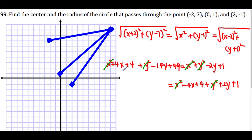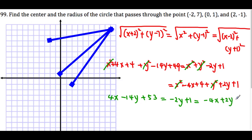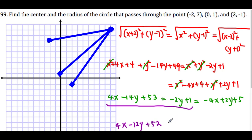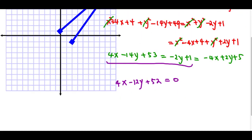Combining terms: 4x − 14y + 53 equals −2y + 1 (the middle), and the last one becomes −4x + 2y + 5. Since they're all equal, we set the first two equal to each other: 4x − 12y + 52 = 0. Then setting the last two equal gives 4x − 4y − 4 = 0.